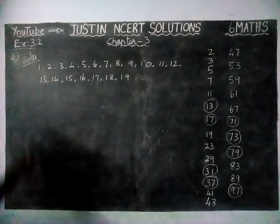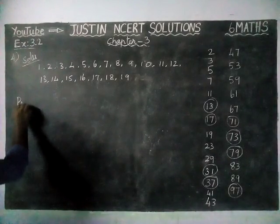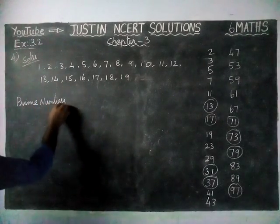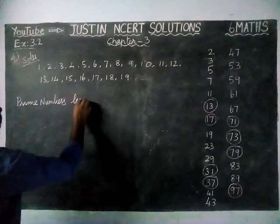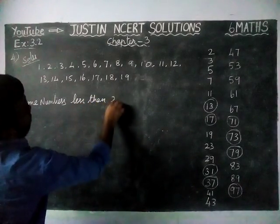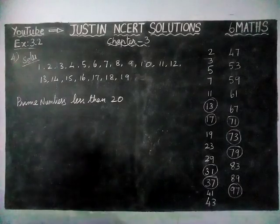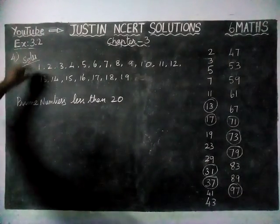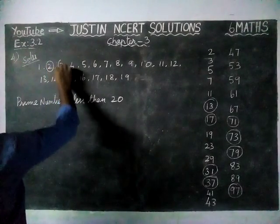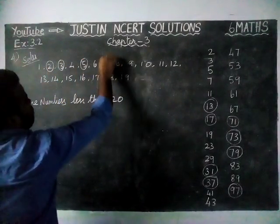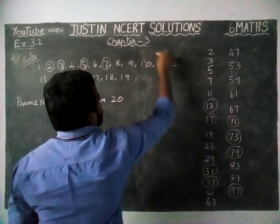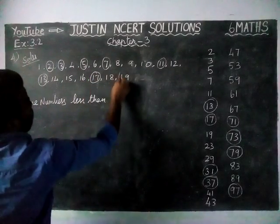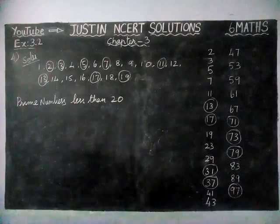Now, we have to write all the prime numbers less than 20. We have to identify all the prime numbers. 1 is not a prime number, not a composite number. So from here: 2, 3, 5, 7, 11, 13, 17, 19. These are all the prime numbers less than 20.